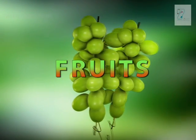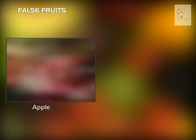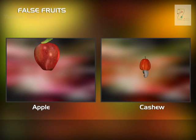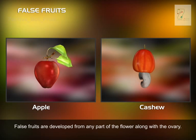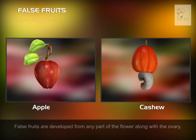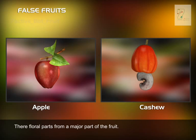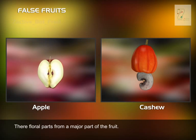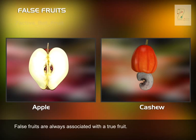Fruits. False Fruits are developed from any part of the flower along with the ovary. Their floral parts form a major part of the fruit. False Fruits are always associated with a true fruit.